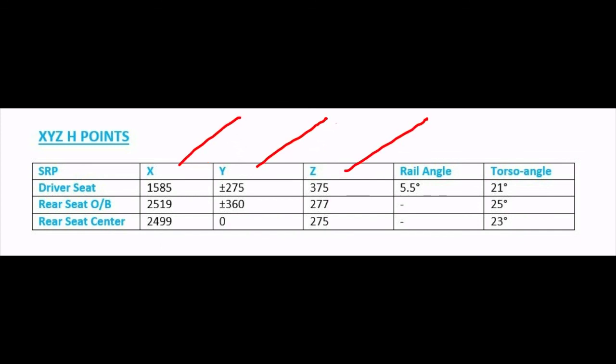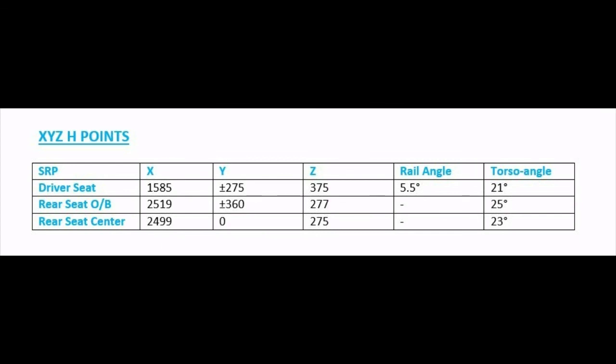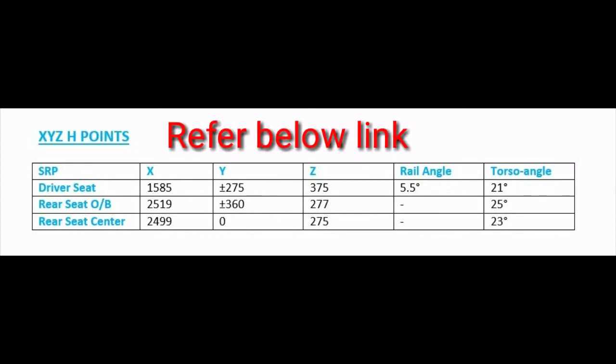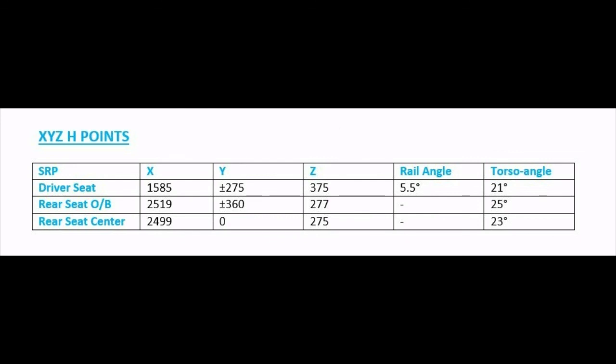The X, Y, Z coordinates are shown, along with the rail angle and torso angle. I have already explained rail angle and torso angle in my earlier video — the link is given in the description box. Driver seat X, Y, Z coordinates are provided. For the rear seat, outboard and rear seat center positions are also provided. In this way, the designer will receive the inputs from the OEM or from any business unit.